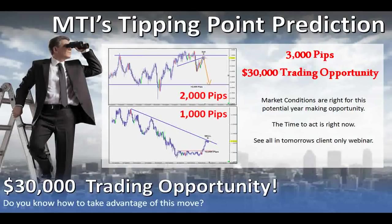Let me start off by letting you know that live each week, this is our tipping point prediction. As a client of MTI, you will receive exclusive information regarding a major market movement. This is a 2,000 pip movement on one currency pair and a 1,000 pip movement on another. At $10 per pip, this would be a $30,000 a year making opportunity between now and the end of this year. Just the other week alone, in one week, we generated over 300 pips — that's over $3,000 US dollars.